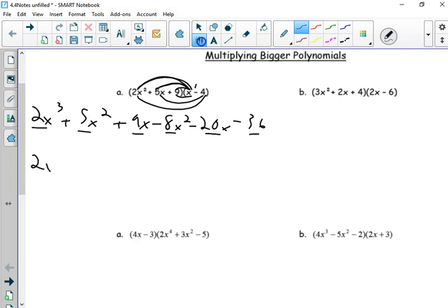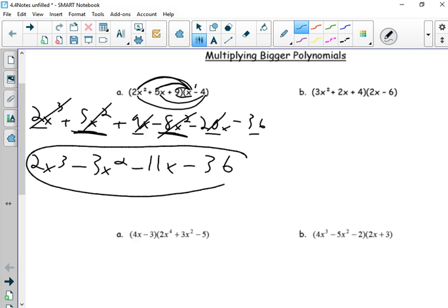I have a cube right here. So, two x cubed. X squared, I have five minus eight minus three x squared. X is nine minus 20. So, nine minus 20 is negative 11x. And then, the negative 36. So, this gets reduced down to four terms from six.